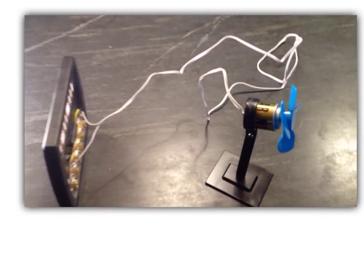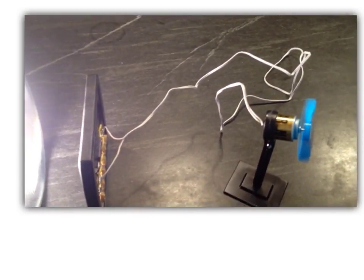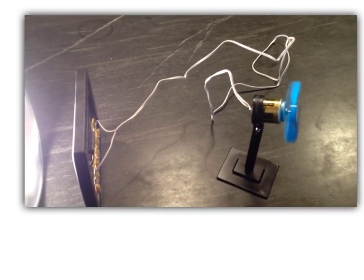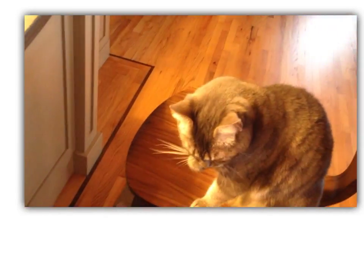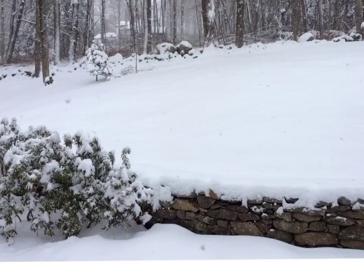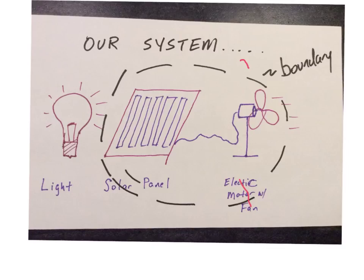When we bring the light bulb close to the panel, it generates some electricity that drives the fan. Here's a sketch of the system: energy comes in striking the panel, that makes electricity which flows to the motor, the motor converts that electricity into motion, and there is some wasted energy along the way.